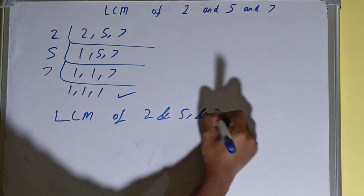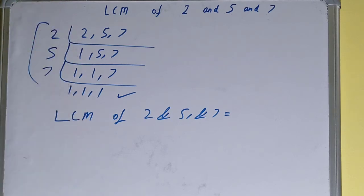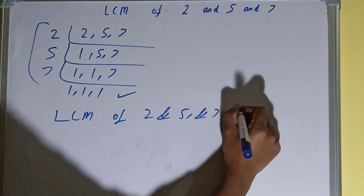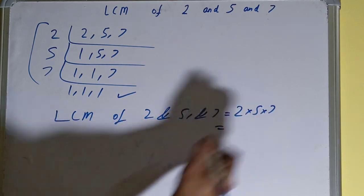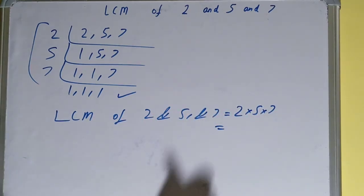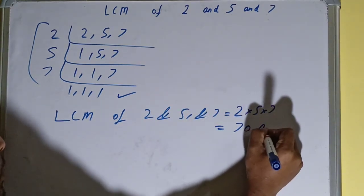That is 2 × 5 × 7. 2 × 5 is 10, 10 × 7 is 70. So your answer will be 70.